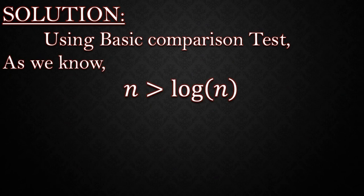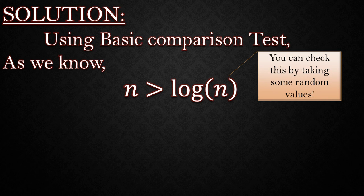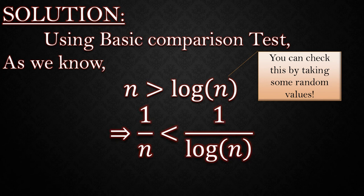Now as we know, n is greater than log of n. You can definitely check the correctness of this statement using random values, but we need 1 by log of n instead of log of n, so we take their reciprocal, and of course reciprocal flipped the inequality.